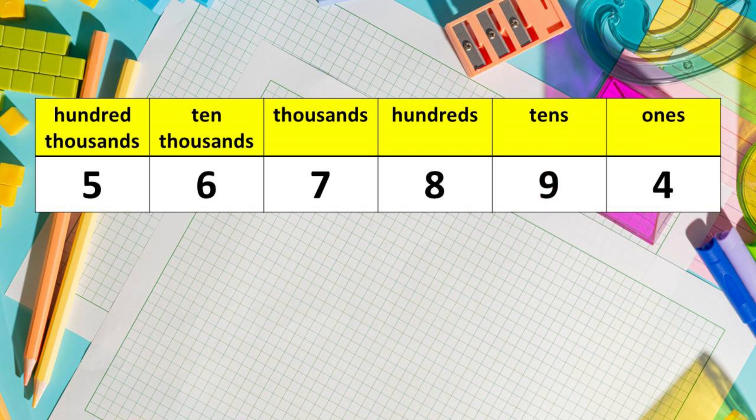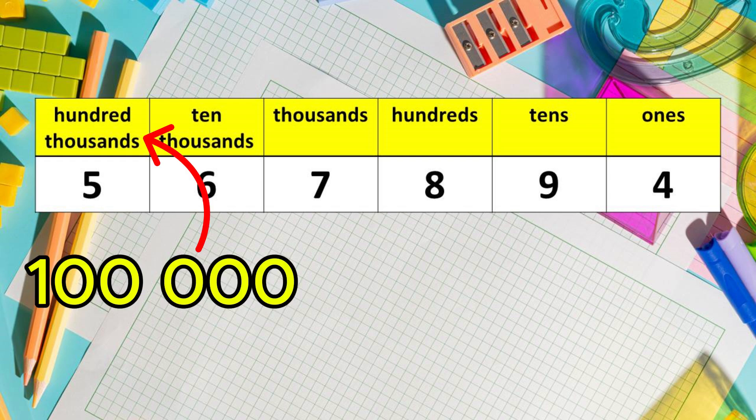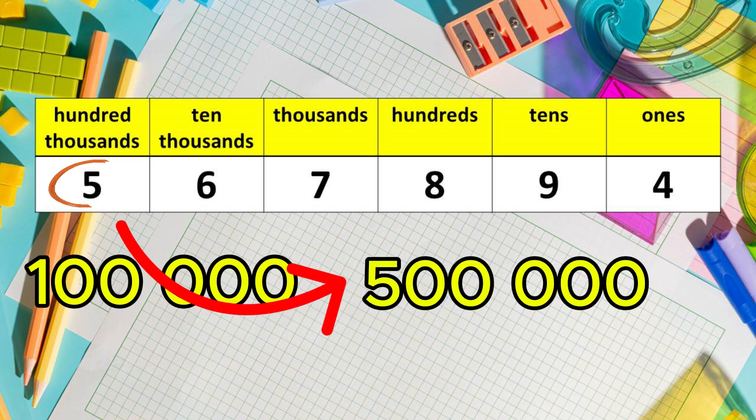It is also important that you know the number of zeros of each place value so that you can easily determine the value of each digit. Like for example, how many zeros are there in 100 thousands? Yes, there are 5 zeros. Now you add these 5 zeros with the digit 5. It becomes 500,000. So the value of 5 is 500,000.